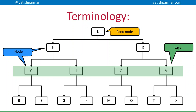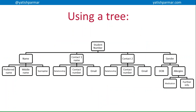As we follow those pointers down a branch — the branches are lighting up blue and purple there — we eventually end up at leaf nodes. We know we've hit a leaf node because any pointers associated with it are going to be null, because they don't point to anything else. Therefore, we know there are no further layers below that one.